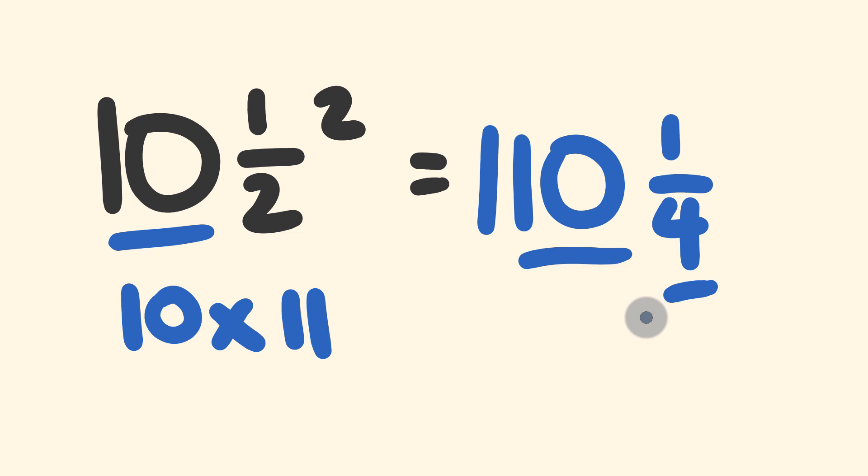What about a couple more examples, because I am running out of time. What about we have a look at 7 and a half squared. You reckon give this one a go? You should be able to get this instantly.